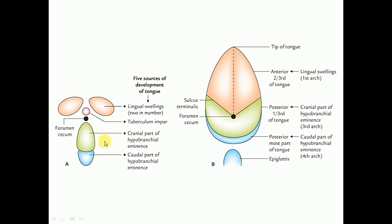The cranial part of the hypobranchial eminence contributes to the formation of the posterior one-third of the tongue. The posterior one-third of the tongue is thus derived from the mesoderm of the third arch.